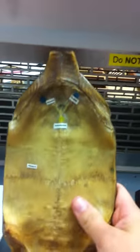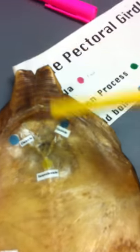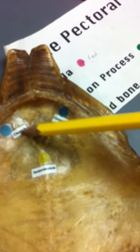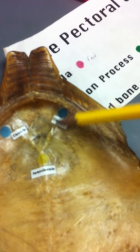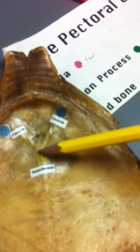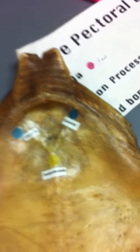Here's a good example of the plastron of a turtle — this whole thing is the plastron. Inside the plastron, you can see your two clavicles right here. And this would be your interclavicle; it's in the shape of a Y.